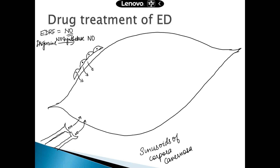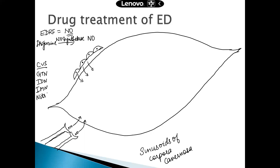There are certain drugs that you have already come across in your CVS section that also release nitric oxide: glyceryl trinitrate, isosorbide dinitrate, isosorbide mononitrate, and the last drug from our cardiovascular section is nitroprusside. So now you know three basic instances where nitric oxide is released into the body.